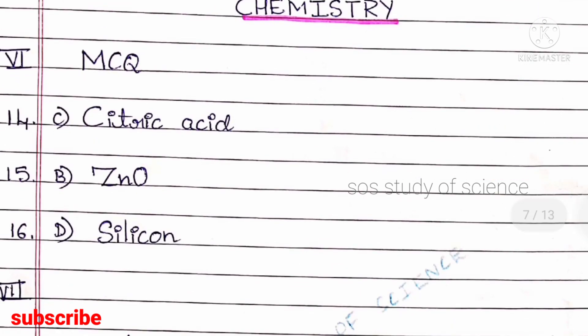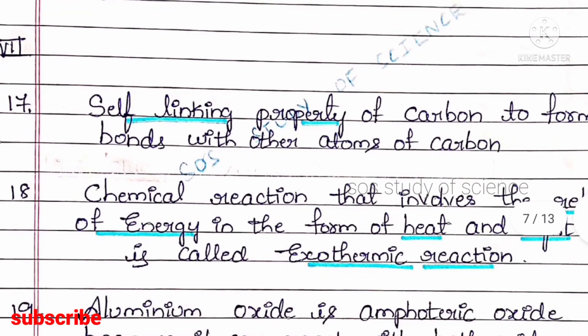Question 16: the elements sodium, magnesium, aluminium, and silicon are placed in the same period in the modern periodic table, having atomic numbers 11, 12, 13, and 14 respectively. Among these, which has the smallest atomic size? The right answer is option D, silicon, because as we move from left to right the atomic size decreases. Next, let us look at the one-mark questions in Chemistry.